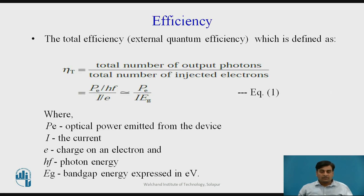The efficiency of injection laser can be defined in several different ways. The total efficiency, that is external quantum efficiency, is defined as the ratio of total number of output photons to the total number of injected electrons. The mathematical equation for external quantum efficiency is Pe divided by I times Eg, where Pe is optical power emitted from the device, I is the current, E is the charge on an electron, Hf is the photon energy, and Eg is the bandgap energy expressed in electron volts.